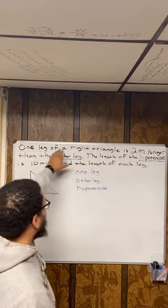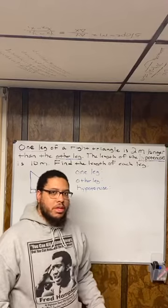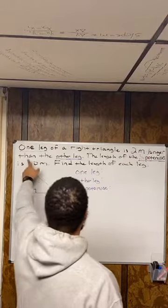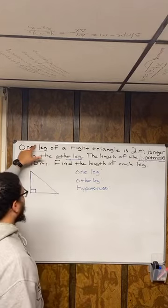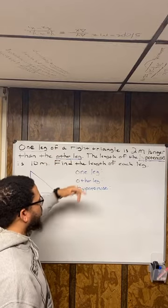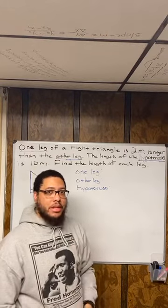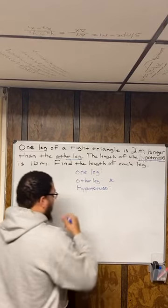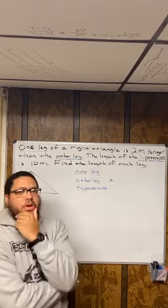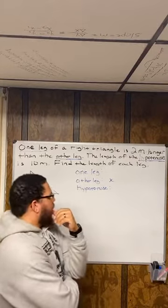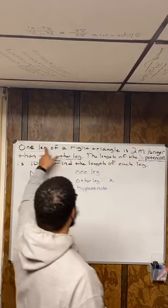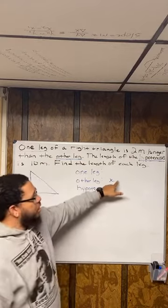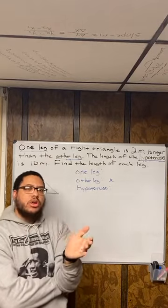In this sentence, what was the first thing they talked about? One leg. What was the second thing they talked about? The other leg — 'two meters longer than the other leg.' So let the second thing they talk about be X. I'm going to call the other leg X. Now, what am I going to call the first leg? It says that one leg is two meters longer than the other leg. So it's two meters longer than X, which means it's X plus two.